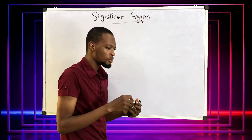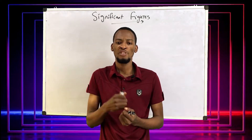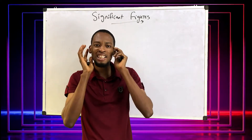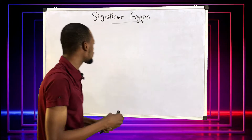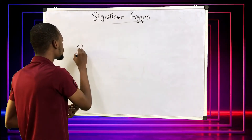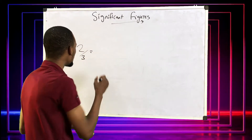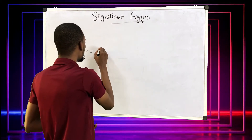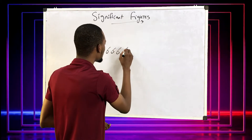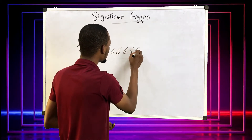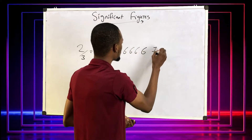When you solve problems in Mathematics, sometimes you get values you don't even need. For example, if you say 2 over 3, or 2 divided by 3, you get values like 0.6, 6, 6, 6, 6, 7.